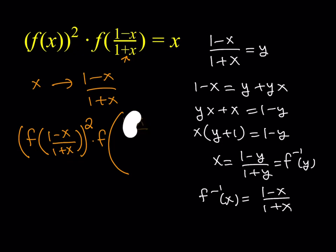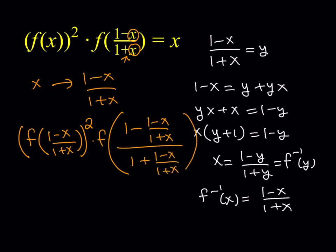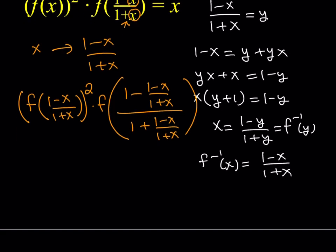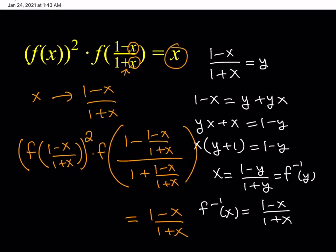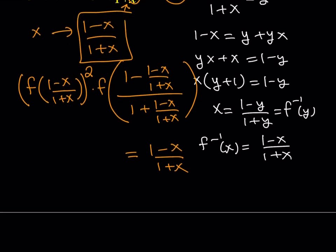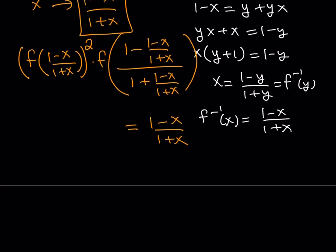I'm replacing x with (1 minus x) over (1 plus x) here and here. From there we should get something simpler. On the right-hand side, this should equal (1 minus x) over (1 plus x), because we replaced x with that expression everywhere — on the right-hand side as well as on the left-hand side. Under certain conditions, this will be satisfied.